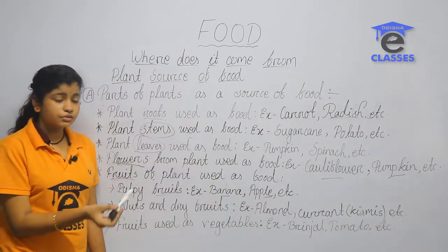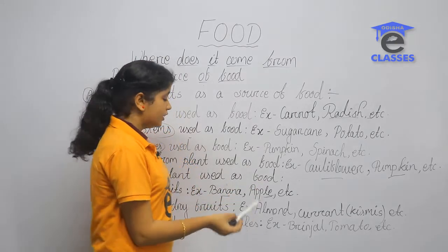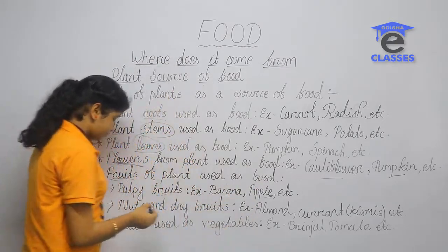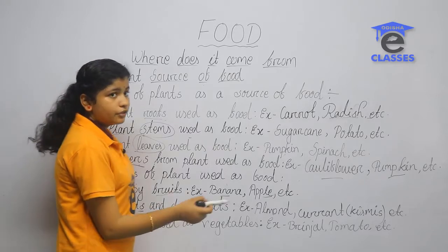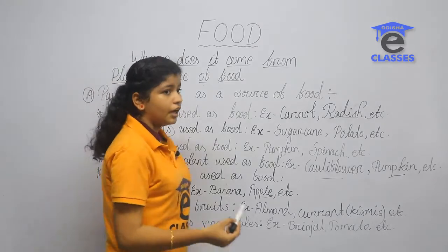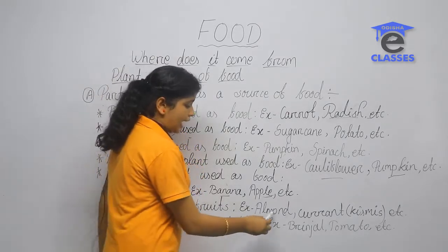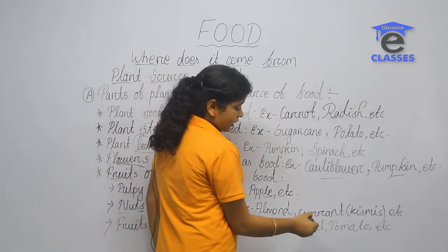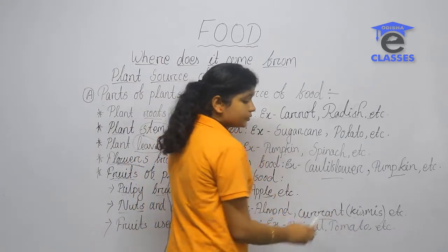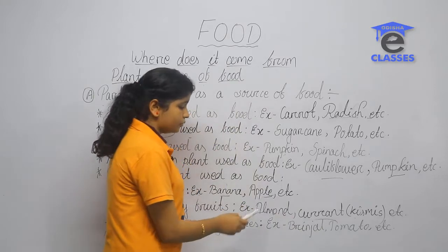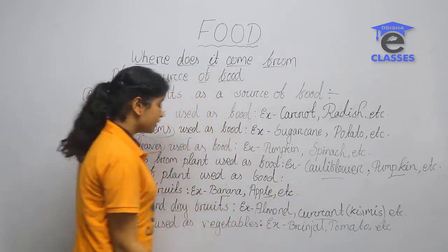Nuts and dry fruits are also used as food. For example, almonds, badim, and kismis (raisins). These dry fruits are a good source of nutrition.